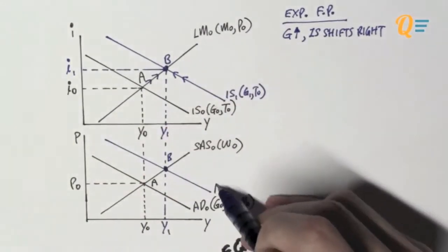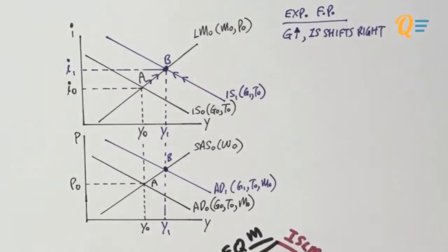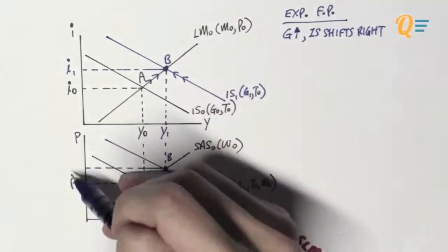So by right, the AD curve is supposed to shift to the right as well, giving me a new equilibrium at point B. So you see, the ADAS equilibrium is still following the ISLM equilibrium.